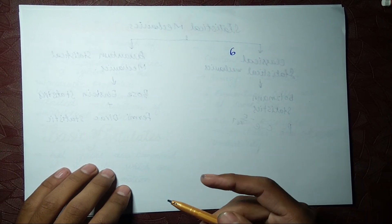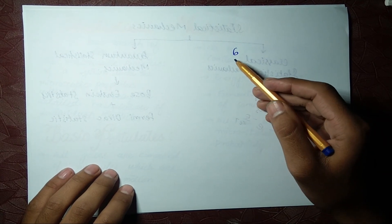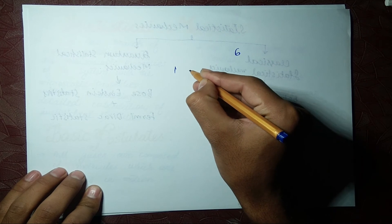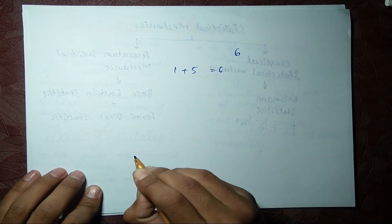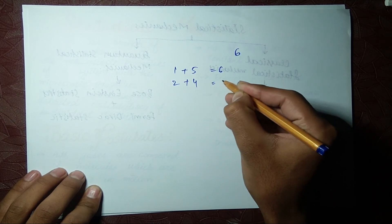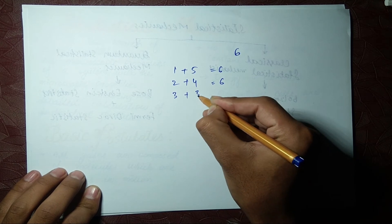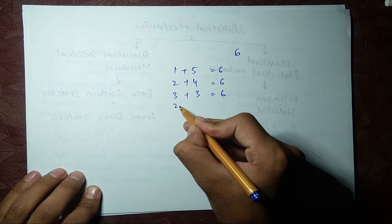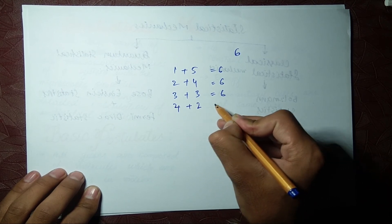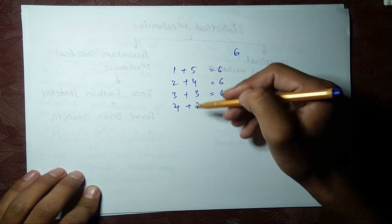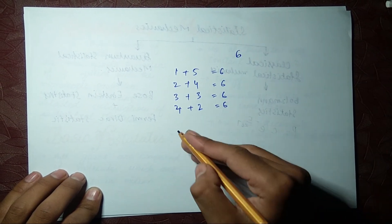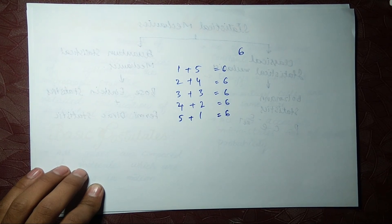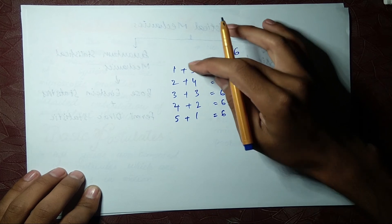So the micro state for getting six is: one plus five equals six, two plus four equals six, three plus three equals six, four plus two equals six, and five plus one equals six. So I have six as a big state, a macro state, and these are the micro states.